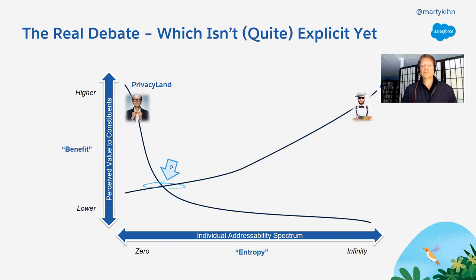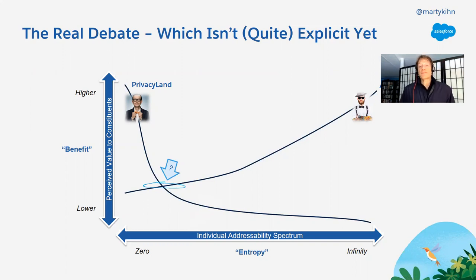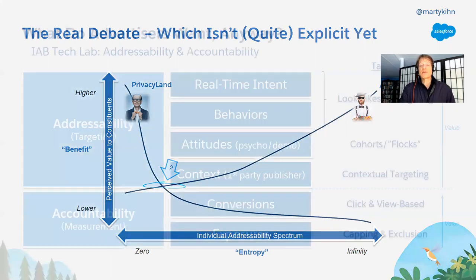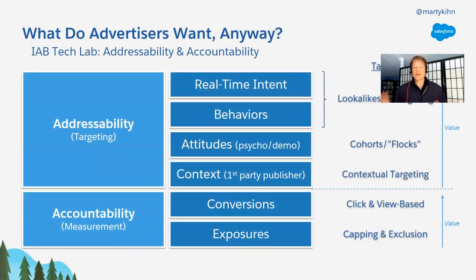On the other hand, there are the browser engineers who would prefer basically no information allowed out about a person — zero entropy, meaning no personal data allowed out of the browser ever. They also believe they're advocating for the consumer. So there's got to be somewhere in the middle. We can't both be completely right or completely wrong. Where is the point where the consumer's privacy is respected, but they're also getting relevant advertising and a certain amount of data is being shared? We don't know yet — that's what's being worked out.